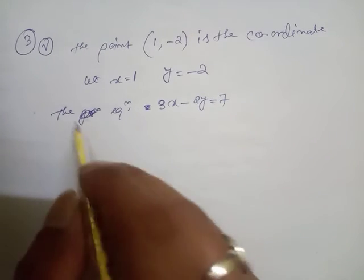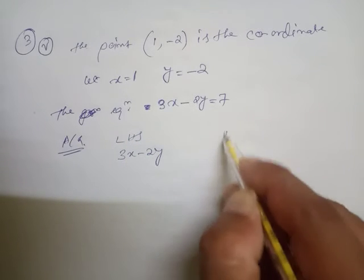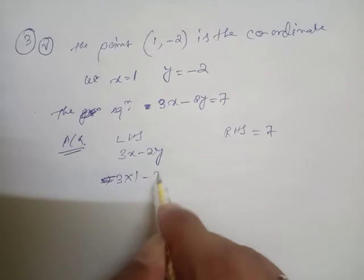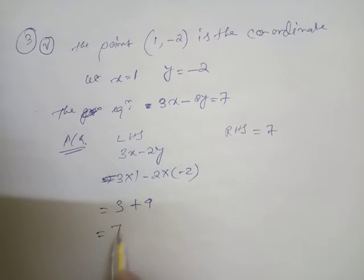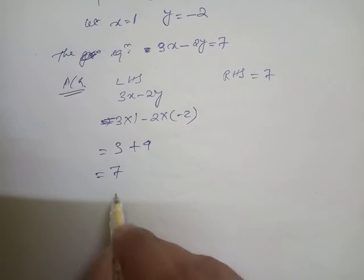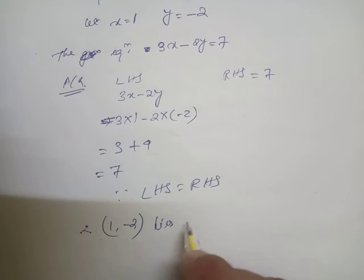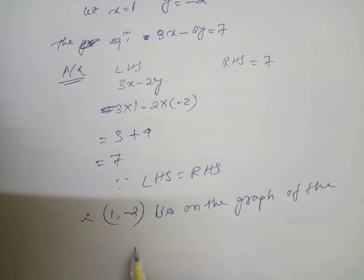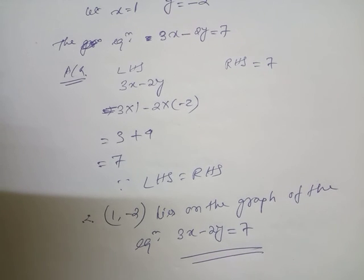This is LHS and this is RHS. According to the question, we examine LHS which means 3x minus 2y, and RHS equal to 7. Substituting x=1 and y=-2: 3 times 1 is 3, and 2 times minus 2 is minus 4, so minus minus gives plus — which means 3 plus 4 equals 7. So LHS equal to RHS. Therefore, since LHS equal to RHS, the point (1, -2) lies on the graph of the equation 3x minus 2y equal to 7. This is the answer.